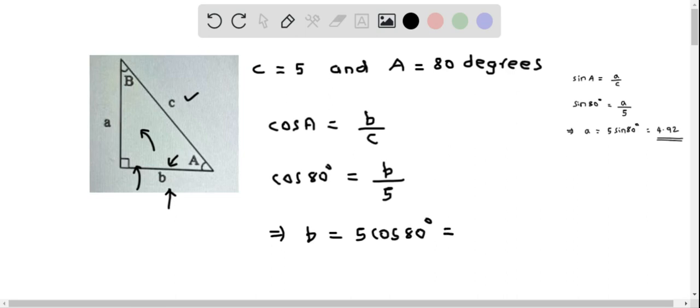And when we plug this into the calculator, we get the value as 0.87. So this is the value of B. And so we have determined the unknown side lengths A and B of this right triangle.